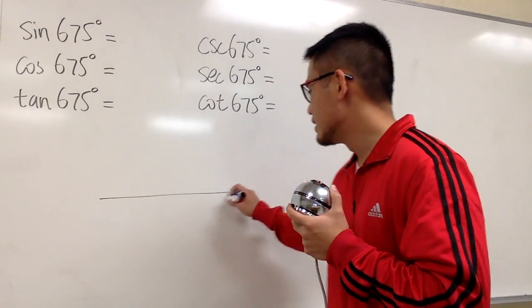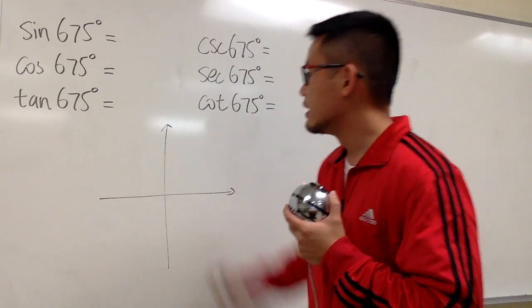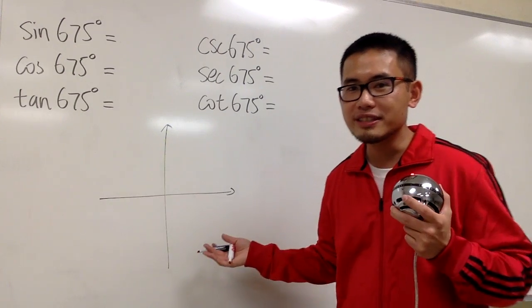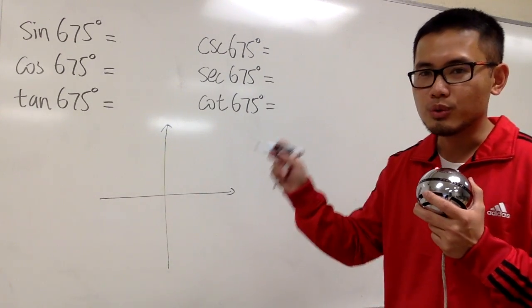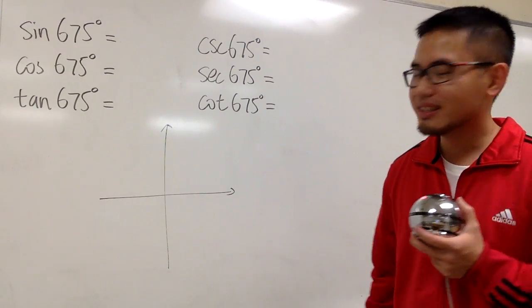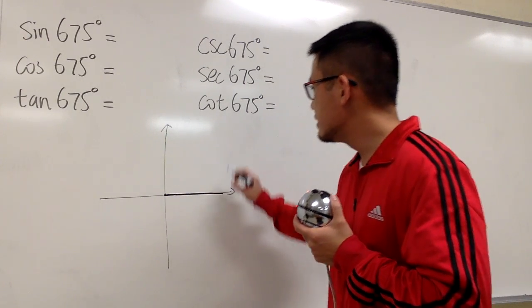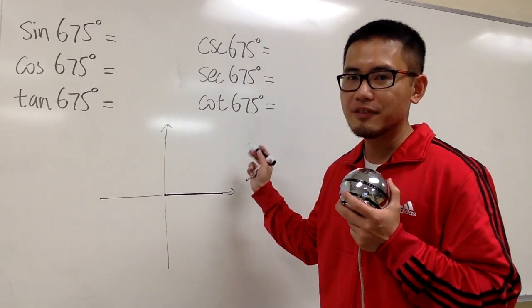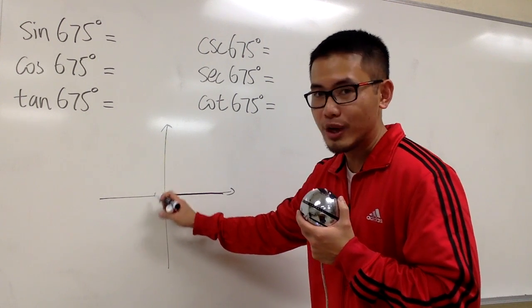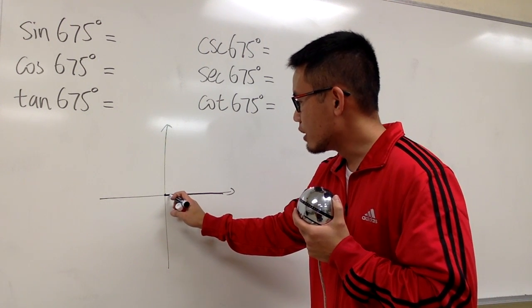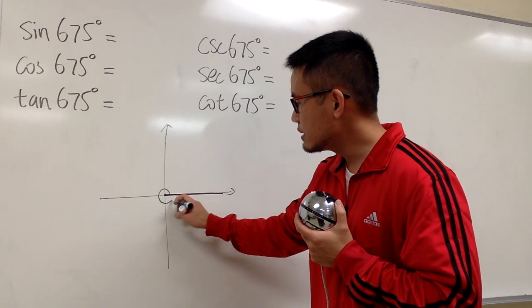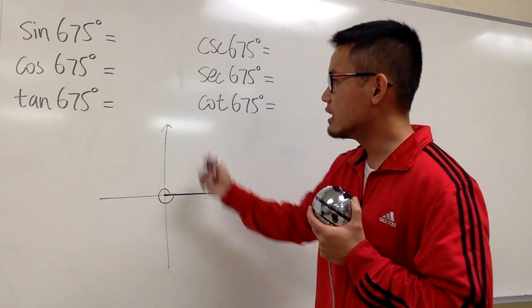So now let's go ahead, draw the x and y axis, and you know this is more than 360 degrees. So be sure when you rotate, keep track carefully. Starting from the positive x axis, and this is positive 675, so you're going to turn this way. So let's go right here. This is going to be 360 degrees, it's not enough yet.